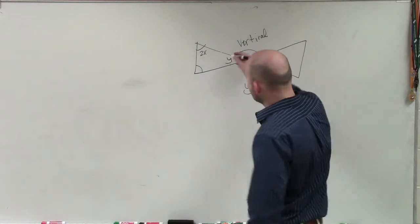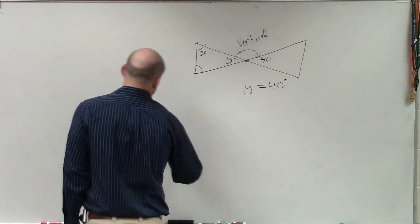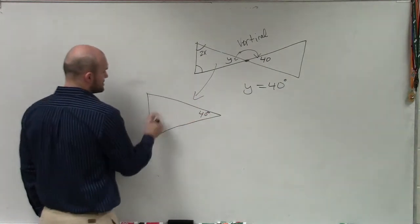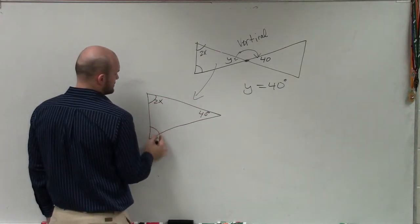So now, if I know that that's 40 degrees, let's go back to this triangle. I'm just kind of like taking this over here. So I know that's now 40 degrees. That's 2x and that's that.